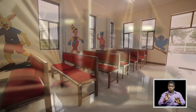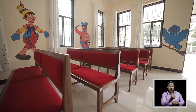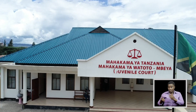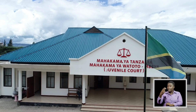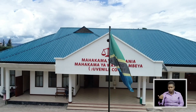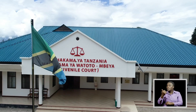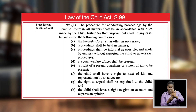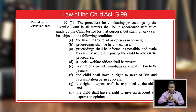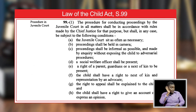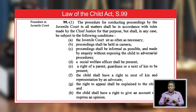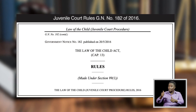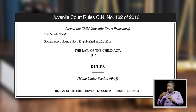It should be noted that the juvenile courts have their own procedure to adjudicate cases. According to the Law of the Child Act, Cap 13, Revised Edition of 2019, a child is regarded as any person below the age of 18 years. Section 99 of the Law of the Child Act provides that the procedure in operating juvenile courts shall be in accordance with the juvenile court rules, as provided under Government Notice No. 182 of 2016.